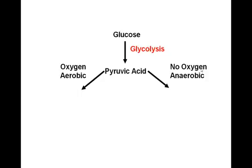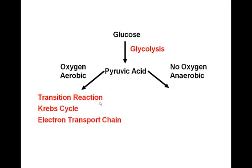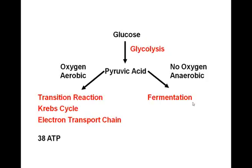This does depend on the cell type. When oxygen is present for aerobic respiration, the pyruvic acid enters into a transition reaction, followed by the Krebs cycle and the electron transport chain, ultimately resulting in the production of 38 ATP. On the other hand, if there's no oxygen and the cell enters anaerobic respiration, the pyruvic acid undergoes fermentation, resulting in far fewer ATP — somewhere in the order of 2 to 4.